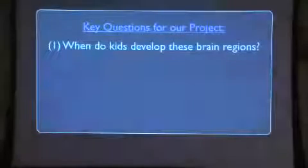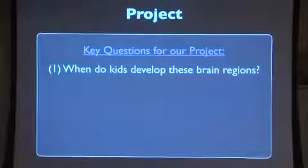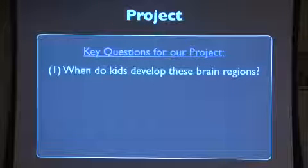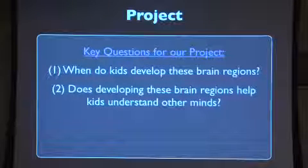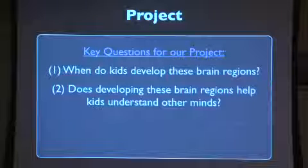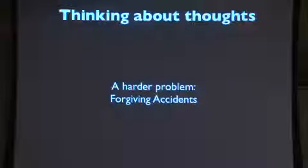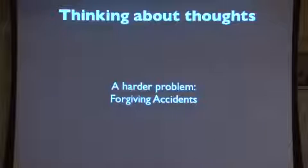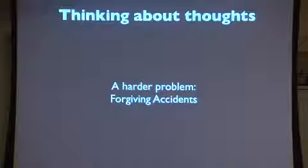So although kids have these brain regions and are doing something social by age five, they're not fully mature until at least eight or nine — maybe later. That lets us ask: does developing a more specialized right TPJ make you better at thinking about other people's thoughts? We can't ask five-to-twelve-year-olds the basic false belief task since five-year-olds are already perfect. But we can devise harder problems that are more appropriate for this age range.